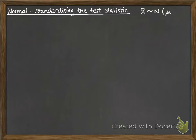We know that x bar follows a normal distribution, and our z value is calculated by doing x bar minus the mean divided by the standard deviation of the sample, which is the square root of sigma squared over n.